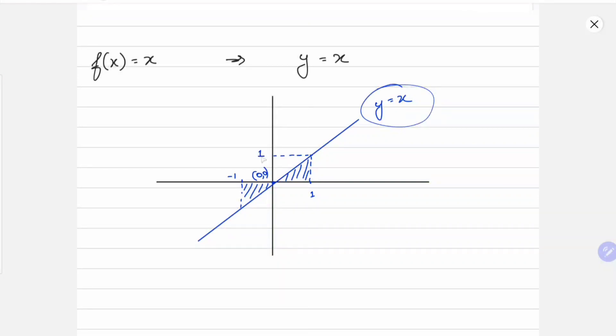This is y equals to x, so this point will be 1 comma 1, which implies that the height of the triangle is 1 and the length of the base is also 1. So the area comes out to be half into 1 into 1 which is basically half, and that's for only one triangle. So the total area comes out to be 1.